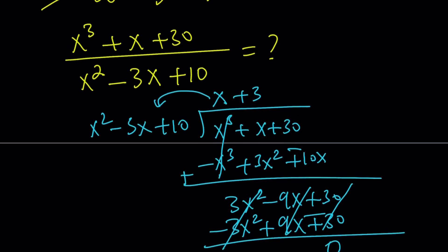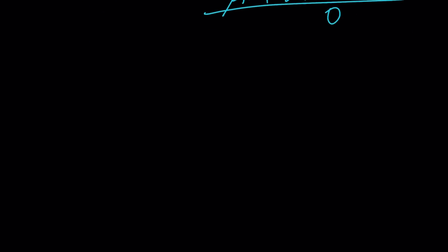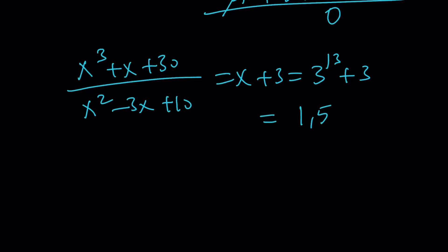So, x plus 3 is the answer. What is that supposed to mean? Well, x was 3 to the power of 13, so our expression x cubed plus x plus 30 divided by x squared minus 3x plus 10 turns out to be x plus 3, but x is 3 to the power of 13, so the answer is 3 to the power of 13 plus 3.